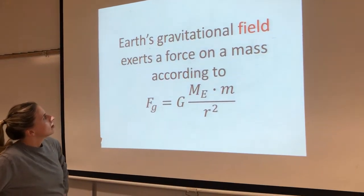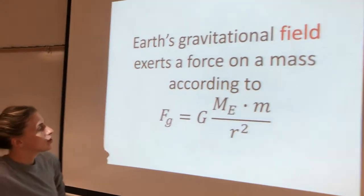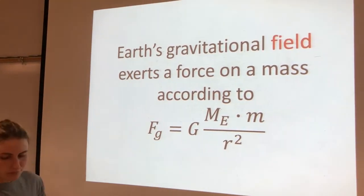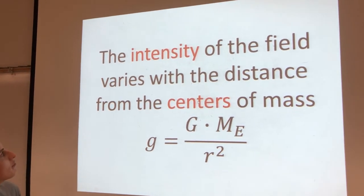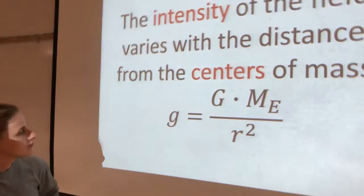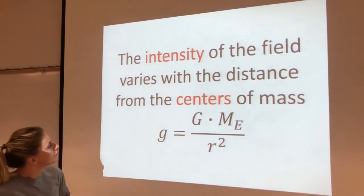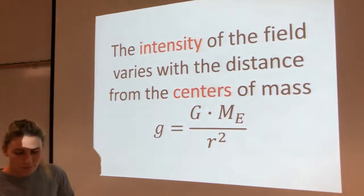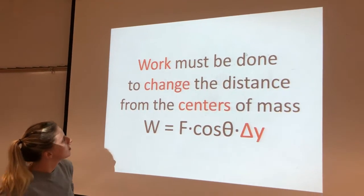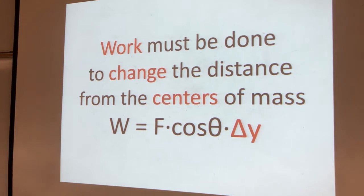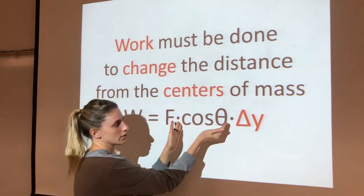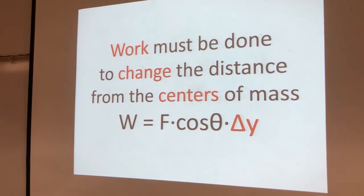Earth's gravitational field exerts a force on a mass according to this equation. We've seen this before. That's Newton's law of universal gravitation. The intensity of the field varies with the distance from the centers of the mass. That little g is the acceleration due to gravity, but it's also an indication of the intensity of the gravitational field at a certain distance from Earth's core.